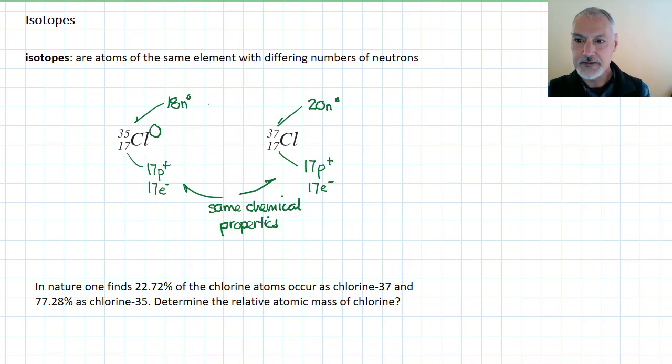This slight difference is going to cause these to have different masses and as a result you're going to have substances that have different physical properties. So if I was to consider a property, let's say density, I would expect this to be a denser material because there's more mass present in the nucleus.